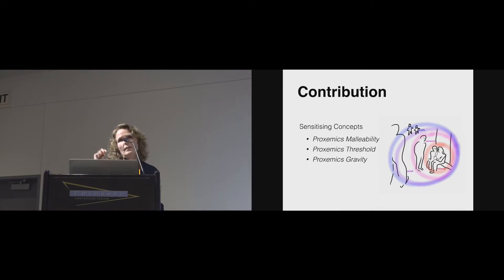So, what we contribute is that we, based on Hall's work and building upon other people's work also, we articulate further the concept of interaction proxemics that I'll get back to a little bit. And in particular, we promote some sensitizing concepts in trying to shape a language in talking about these qualities, because right now it's really hard for us to articulate. And we suggest here three concepts which has to do with proxemics malleability, proxemics threshold, and proxemics gravity. And I'll get back to the detail about what these are.